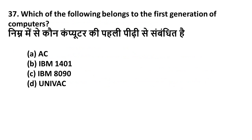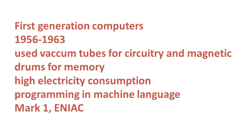Question 37: Which of the following belongs to the first generation of computers? Option A: IC, Option B: IBM 1401, Option C: IBM 8090, Option D: UNIVAC. UNIVAC is the first generation computer — Option D is the right answer. First generation computers span from 1946 to 1956; they used vacuum tubes for circuitry and magnetic drums for memory, consumed high electricity, and used machine language as programming language. Other examples include Mark 1 and ENIAC.